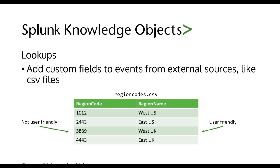Lookup tables add custom fields to events from external sources like CSV files. In the simplest sense, a lookup table is a CSV file with two columns. Say you have a region code in your Splunk data that's not user-friendly because it's just a number. Suppose you want to tell Splunk that every time it sees a particular region code, replace it with a particular region name. On the left we have example region codes, and on the right we have example region names. Every time Splunk sees region code equals 2443, it will add another column with region name showing East US. We could also have it replace the existing value.